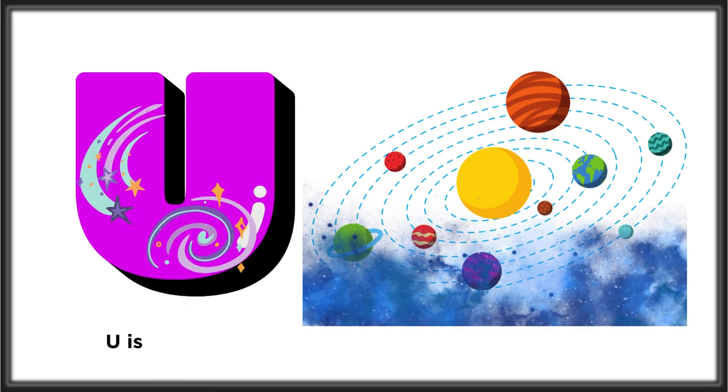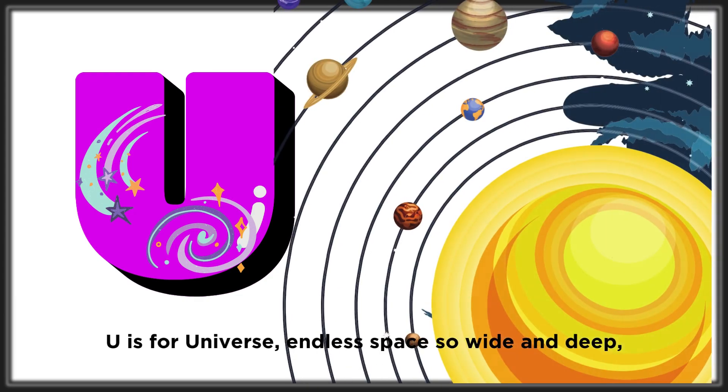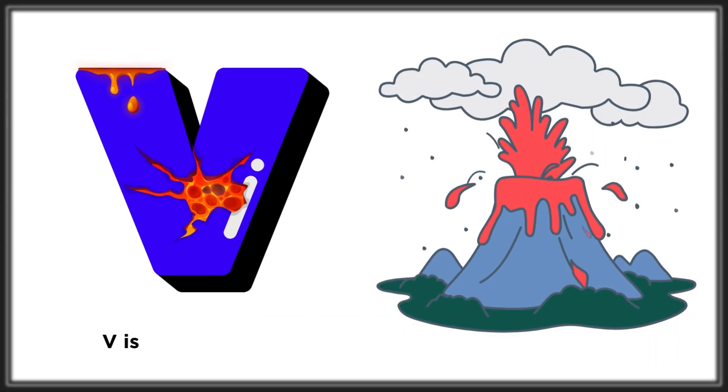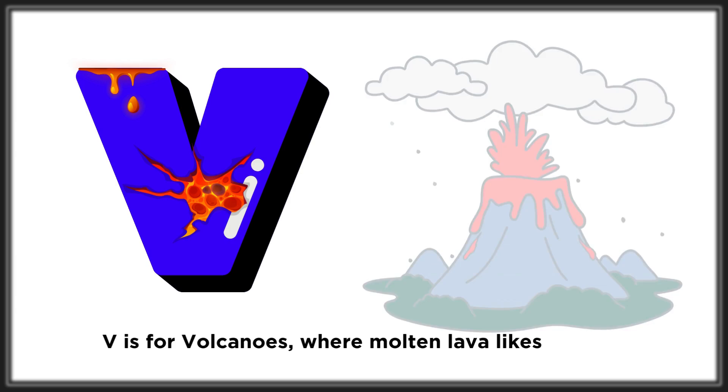U is for universe, endless space so wide and deep. V is for volcanoes, where molten lava likes to leap.